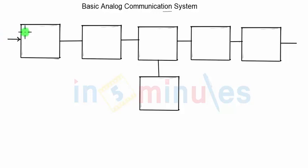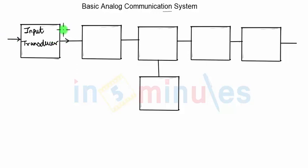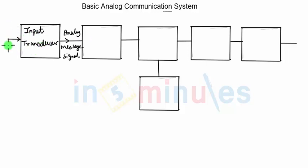The first block is the input transducer. The input transducer measures some physical quantity and generates the corresponding analog message signal. So the output of the input transducer is the analog message signal which needs to be transmitted to the receiver side. For example, if the transducer is a temperature sensor, it will measure the surrounding temperature and produce the analog message signal.